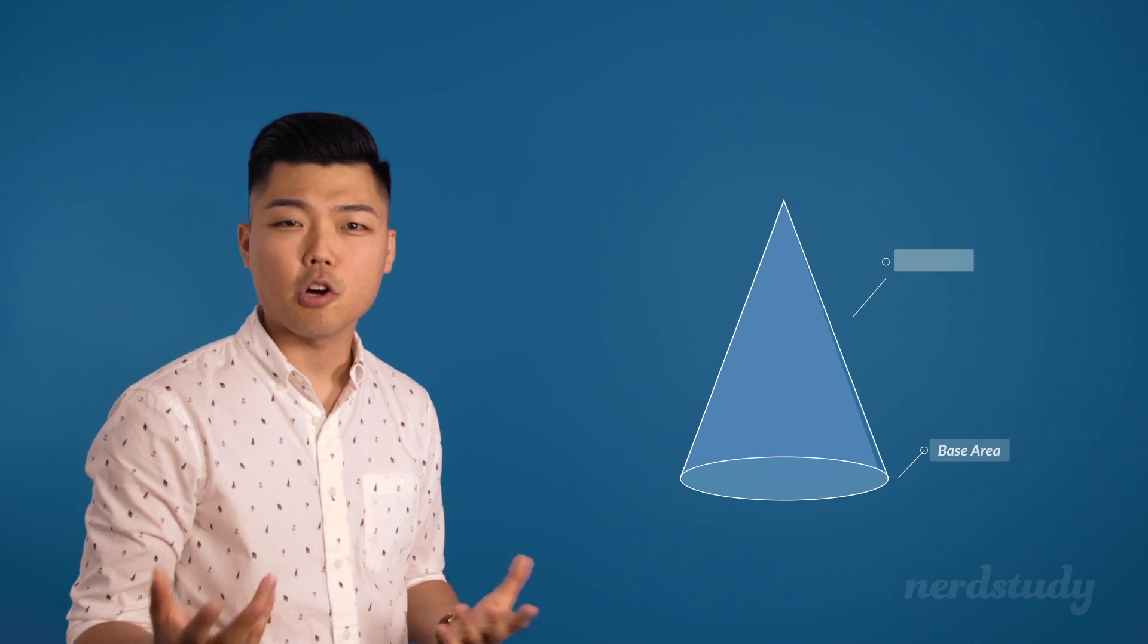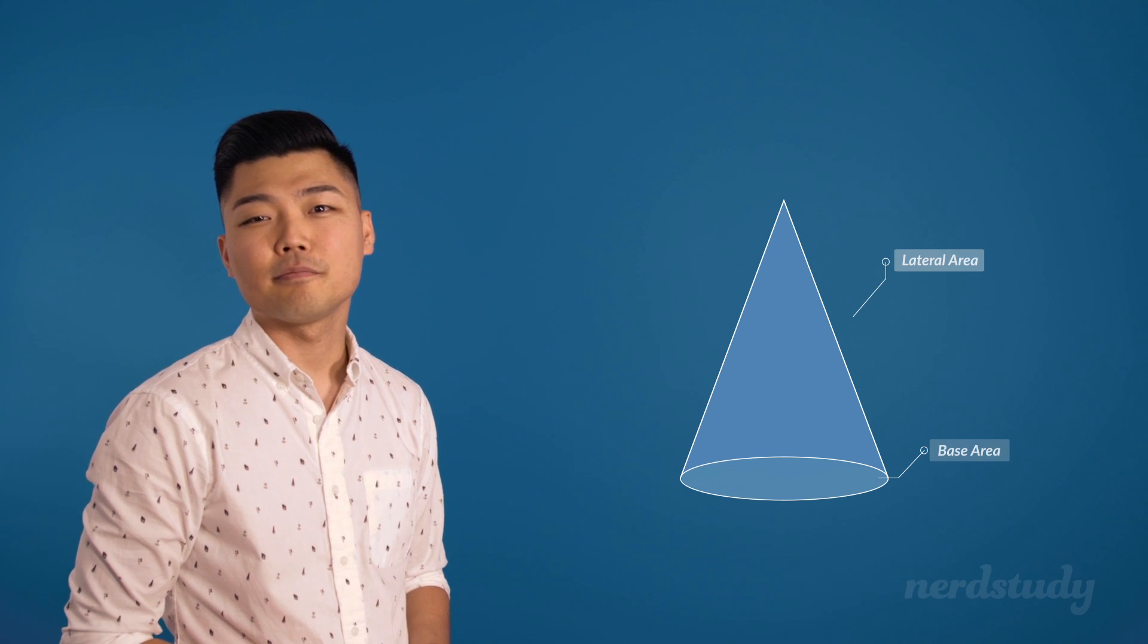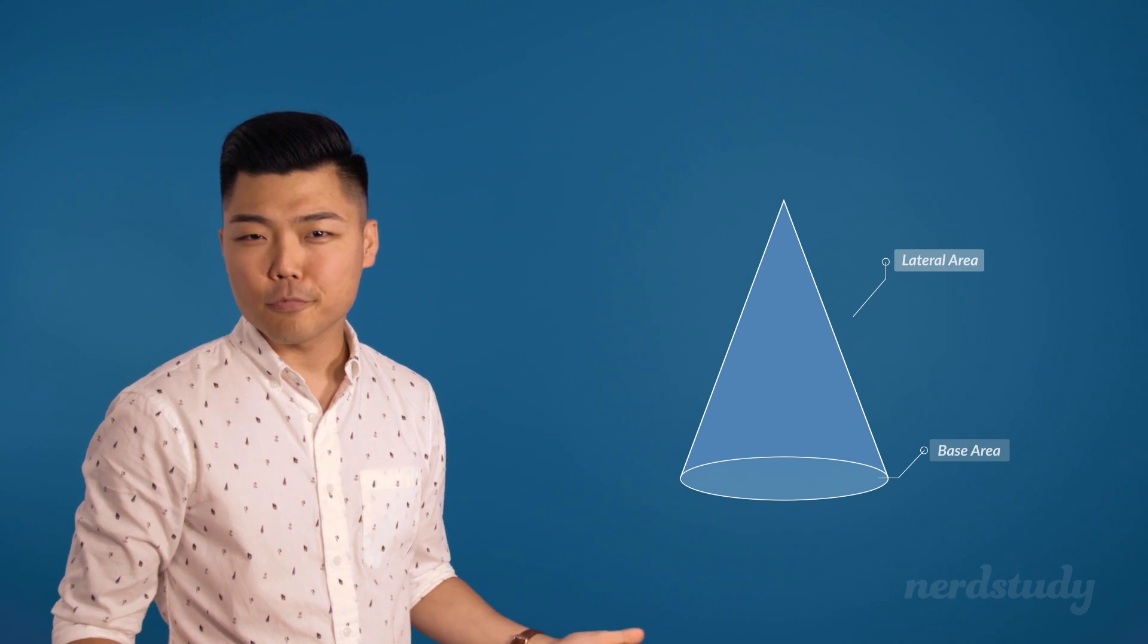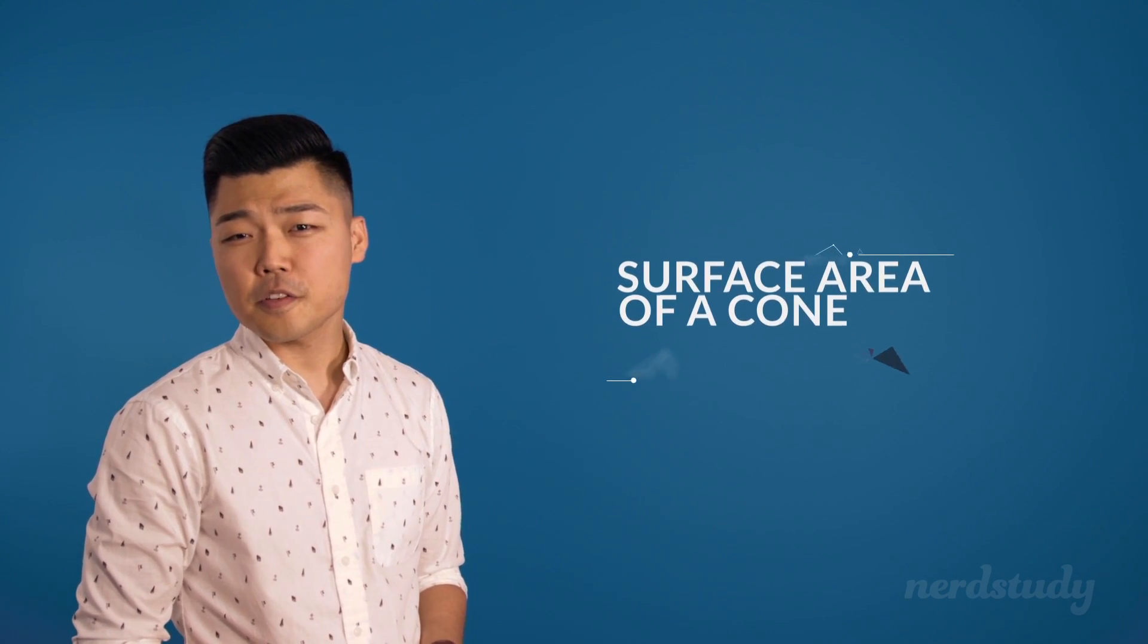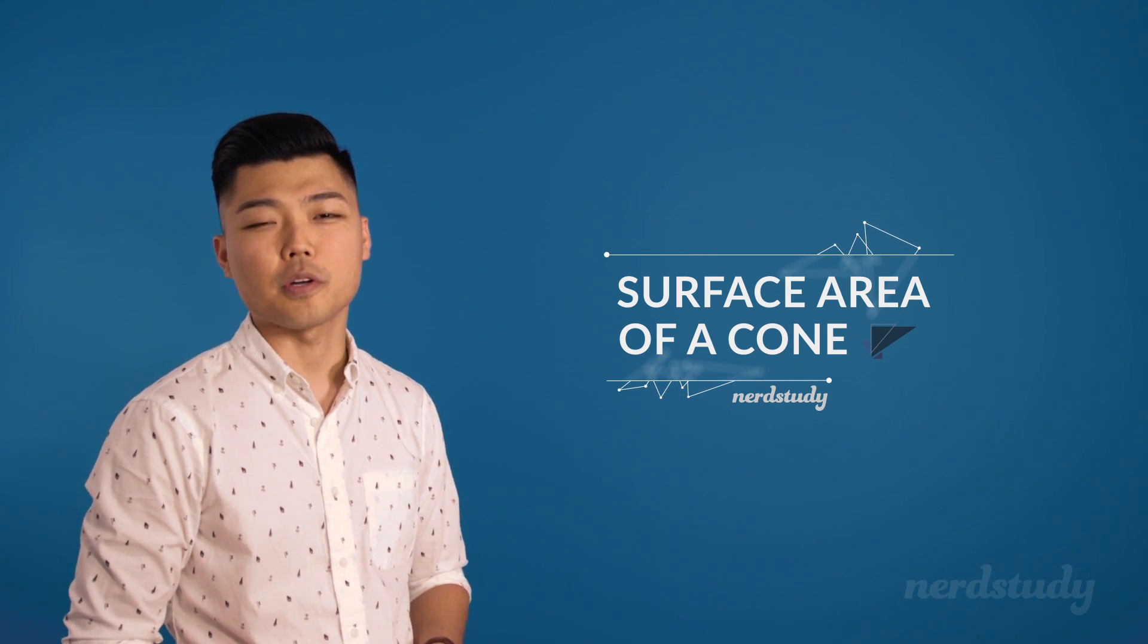The key here is to know that the surface area of a cone is made up of two portions that are added together. We've got the base area, which is the area of a circle. And then we've got everything else wrapping around it, called the lateral area. Once we understand that, we're able to answer questions like the one that we just did. Well, that's it for this lesson on surface area of cones, and we will see you in the next one.